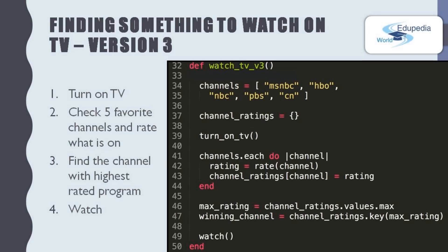we write it like this. Define watch TV version 3. And here is our top 5 TV channels. MSNBC, HBO, NBC, PBS, NCN. From the code line 37, we create the empty list channel ratings to input the ratings of the program.